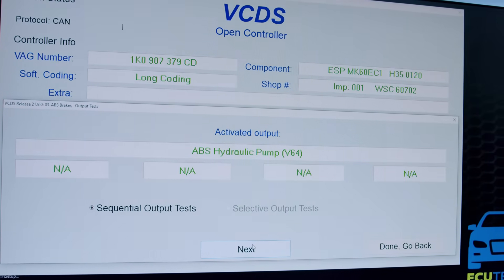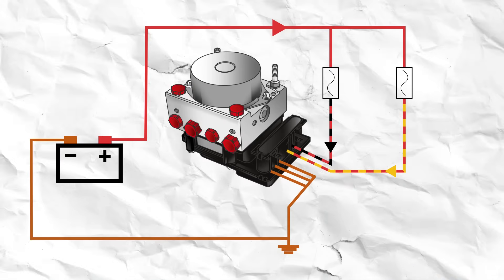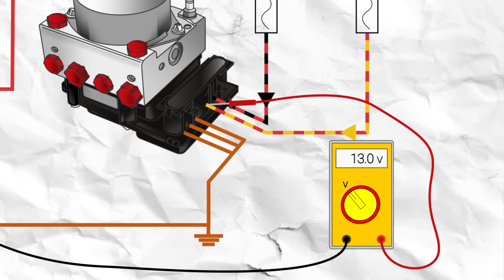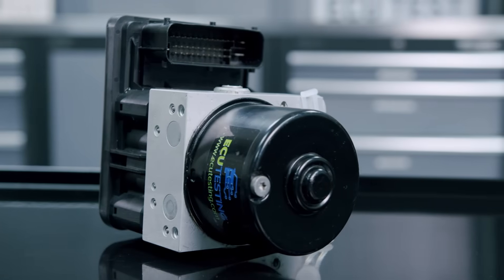To clarify this, run another pump motor output test whilst checking voltages. If there is an excessive drop of voltage at the ABS end, then this will confirm a wiring fault. If not, then the ABS unit is likely faulty and will need sending in to us.